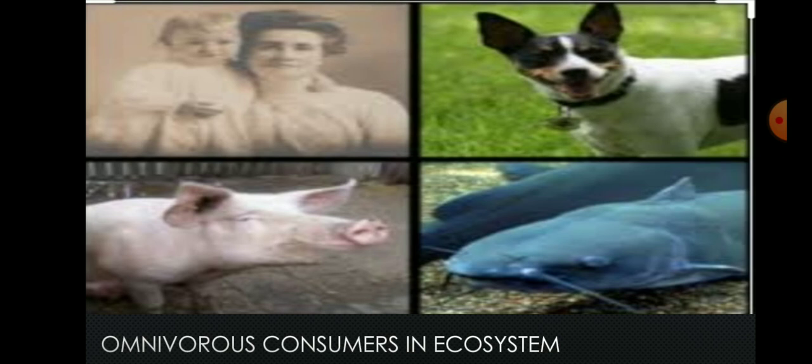Next one is omnivores, also known as mixed consumers. Examples include humans, bear, etc. They feed on both plants and animals, so they can be called omnivorous consumers.